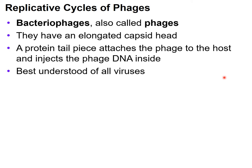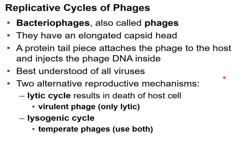The bacteriophage is probably one of the best understood of all viruses, and it's used in biotechnology to purposefully infect cells so they can produce or express proteins that are desired to be studied. For phages, there are two alternative reproductive mechanisms: the lytic cycle and the lysogenic cycle. The lytic cycle results in the death of the host cell — the phages are released and it causes the cell to burst. This is a virulent phage; a virulent phage is only lytic and causes disease and damage to host tissue. The lysogenic cycle involves temperate phages, which actually use both the lytic and the lysogenic cycle.